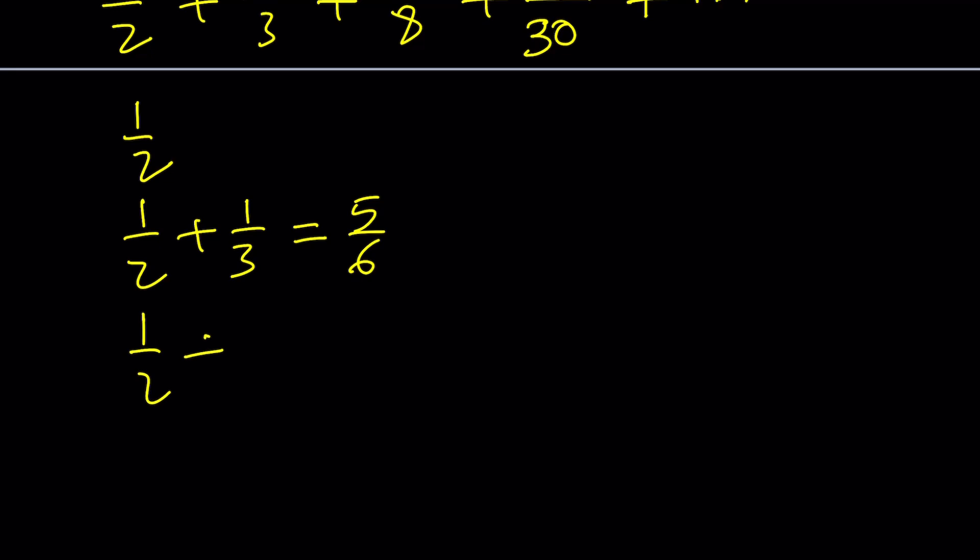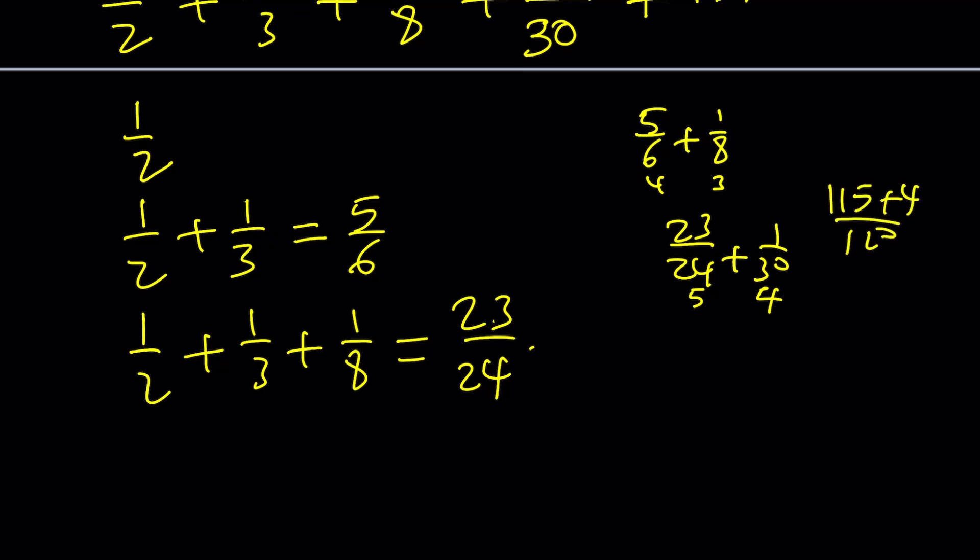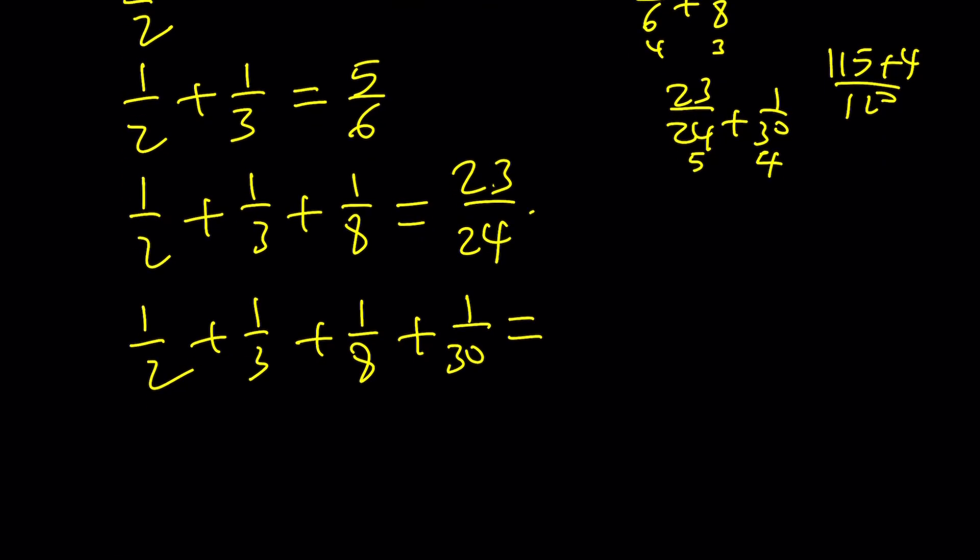Then we're going to add 1 over 8. When you make a common denominator, that will be 24, so we get 23 over 24. And then let's add one more thing, 23 over 24 plus 1 over 30. We find the common denominator, that's 120, and that would be 23 times 5, which is 115 plus 4, divided by 120. Notice we're always adding unit fractions that are getting smaller and smaller. So the sum gets bigger, but the rate at which it's getting bigger is slowing down.